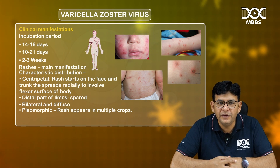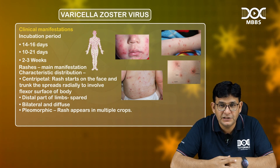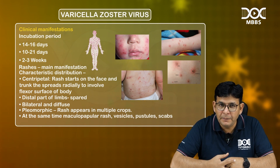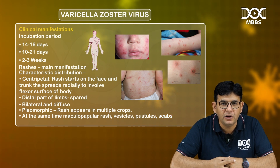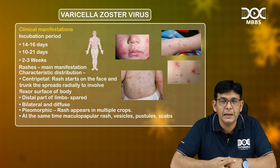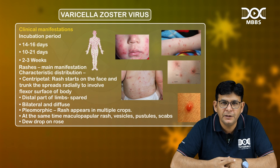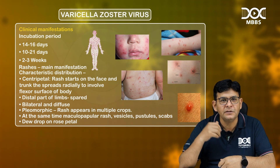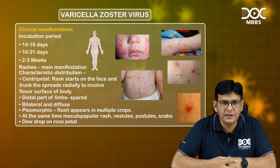Another important thing is the pleomorphic type of rash. The rash appears in multiple crops, and at the same time you can see maculopapular lesions, vesicles, pustular lesions, and scabbing. That is a unique feature of chickenpox. There is also a characteristic appearance called 'dew drop on rose petal,' classically seen in chickenpox, as visible in pictures of affected children.